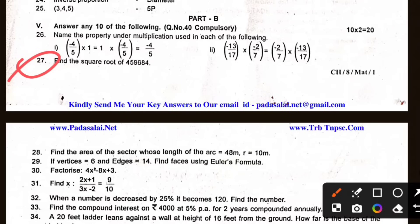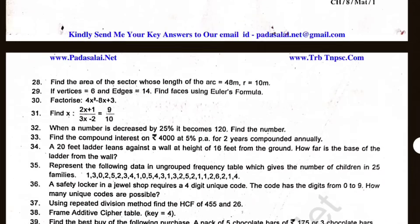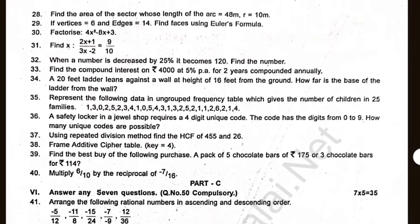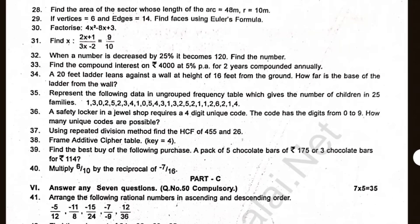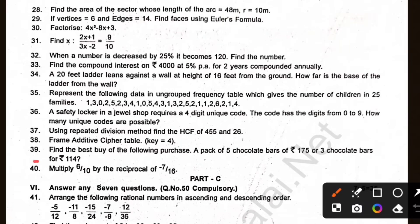So using Euler formula, okay, but factoring is easy, that's easy. So using Euler formula, okay. 40 is easy, that's easy.